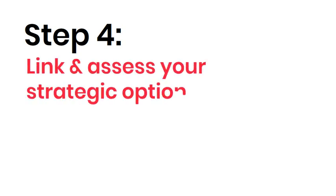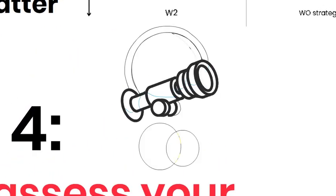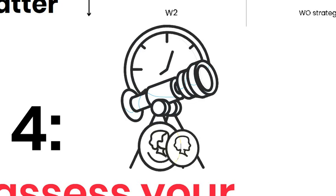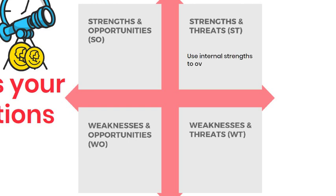Link and assess your strategic options. Using the matched internal and external factors, generate a list of strategic options that could address the opportunities, weaknesses and threats, while taking advantage of strengths and opportunities. Consider multiple options for each quadrant of the TAILS analysis, as this will help identify the most effective strategies. For each combination of internal and external environmental factors, consider how you can use them to generate good strategic options. Strengths and Threats (ST): this quadrant suggests how to use strengths to overcome threats. Go through every strength identified in the SWOT, and map out how they can be used to eliminate or at least minimise the threats that exist externally.